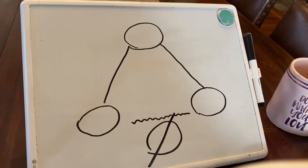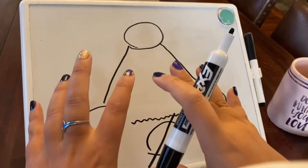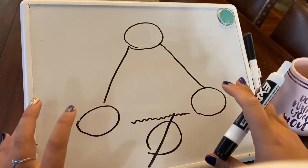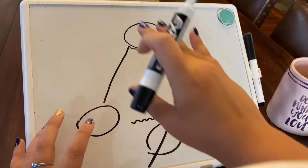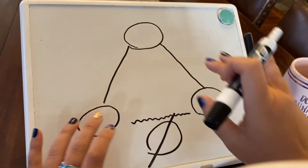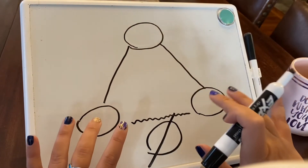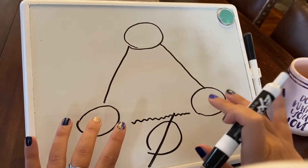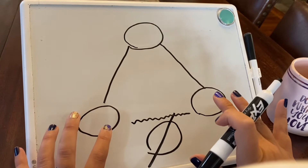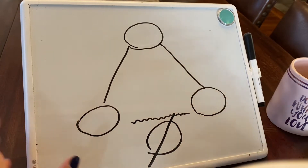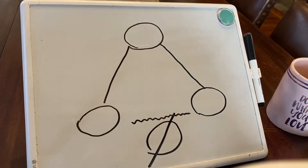The reality is that we've all been in some form of triangulation, whether we were the manipulator or the manipulated at one point or another in our lives. So how do we take a look at when this could apply?